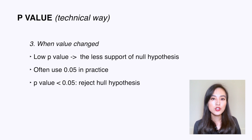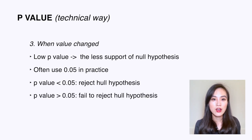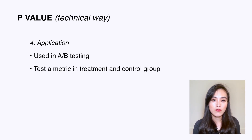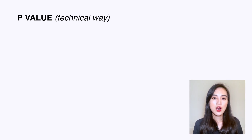In practice we often choose 0.05 as a cutoff value. A p-value less than 0.05 denotes strong evidence against the null hypothesis, meaning the null hypothesis can be rejected. A value larger than 0.05 denotes weak evidence against the null hypothesis, meaning the null hypothesis cannot be rejected. It is commonly used in A/B testing when we have a treatment and a control group and want to test whether a metric differs between them. The smaller the p-value, the more convinced we are there is a difference.